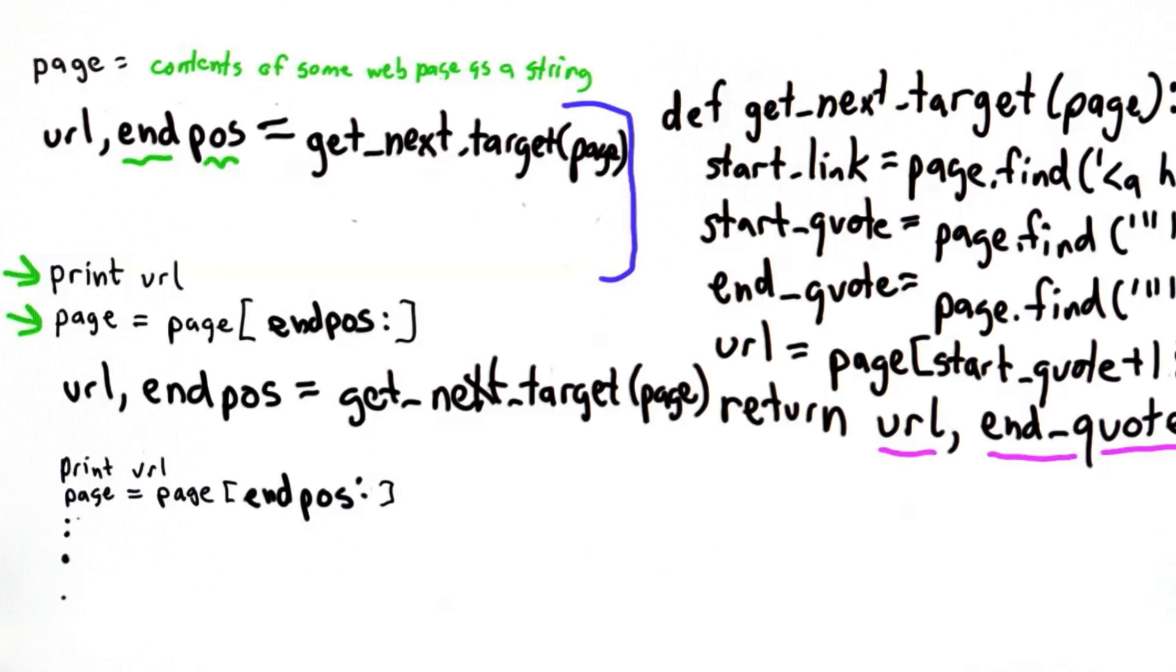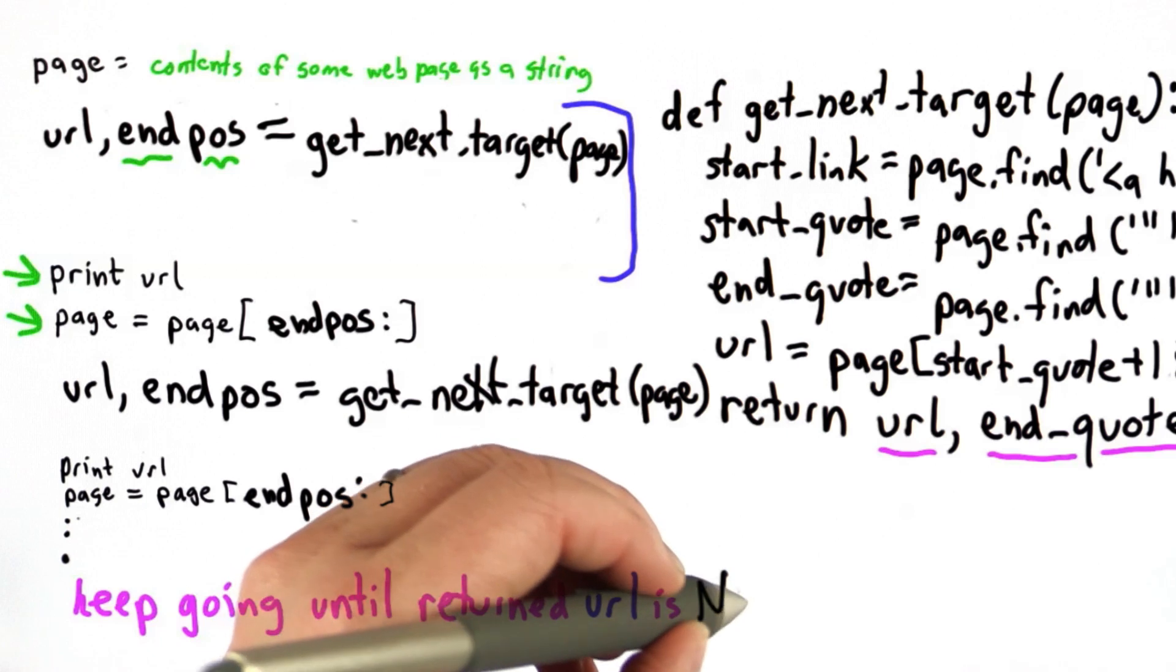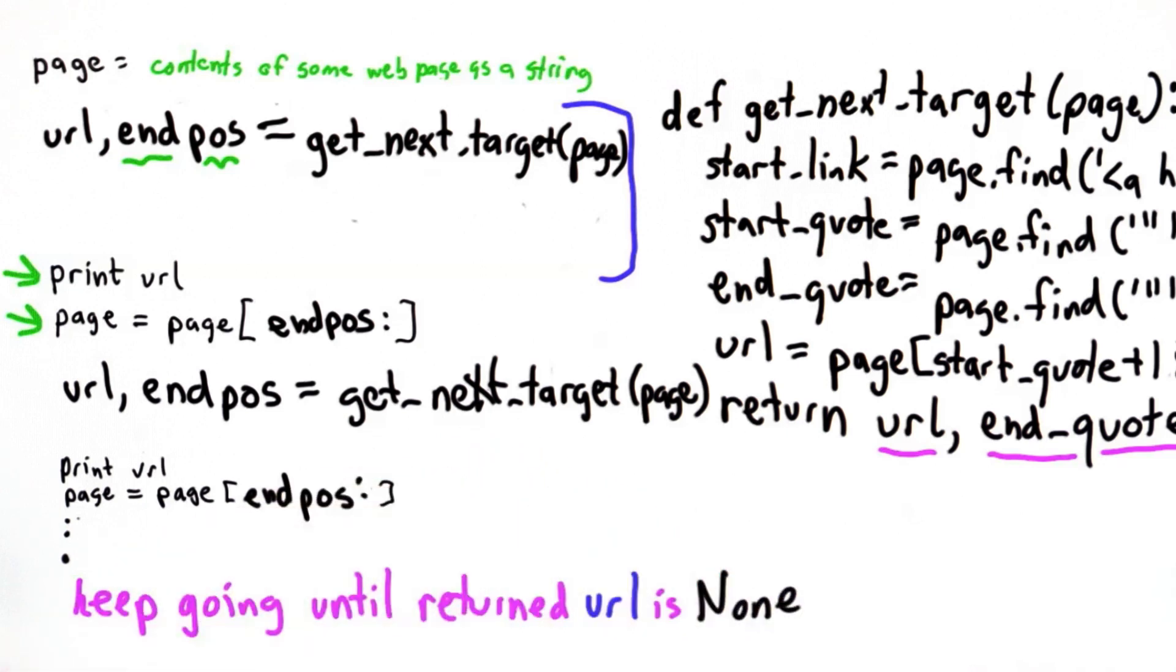So how do we decide when we got to the end? Well, we got to the end when the URL that's returned is none. And when the call to getNextTarget returns none for the URL, we know we're done.